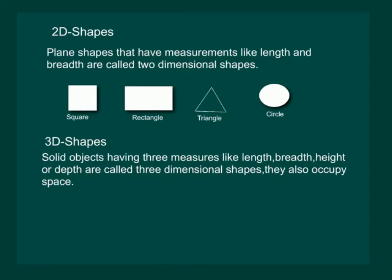Next, what are 3D shapes? Solid objects having three measures like length, breadth and height or depth are called three-dimensional shapes. They also occupy space. That means 3D shapes also have a volume.